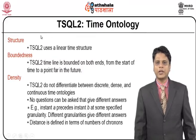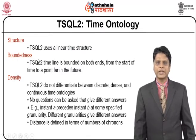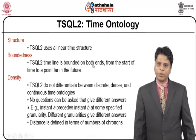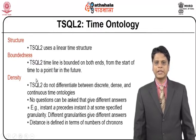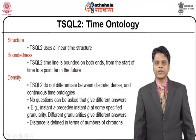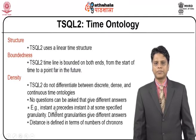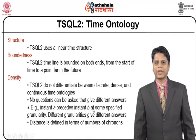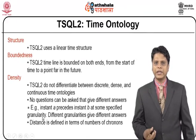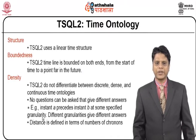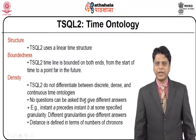For T-SQL version 2, the structure used is a linear time structure. For boundedness, the timeline is bounded on both ends from the start of time to a point far in the future. In case of density, T-SQL does not differentiate between discrete, dense, and continuous time ontologies. For example, an instant A precedes an instant B at some specified granularity — meaning small chunks of data — where different granularities give different answers. Distance is defined in terms of number of chronons.